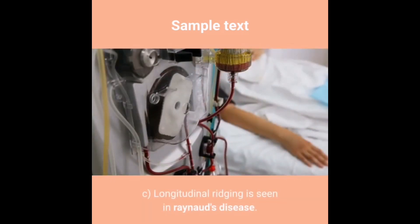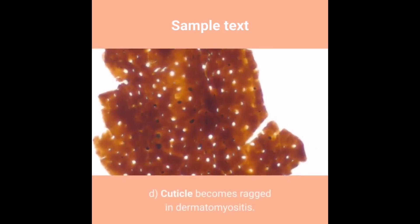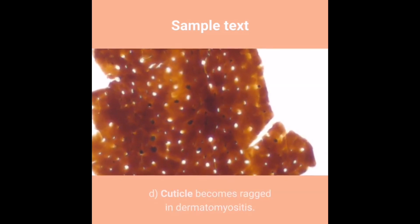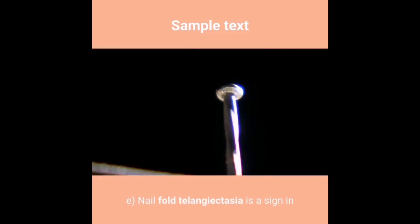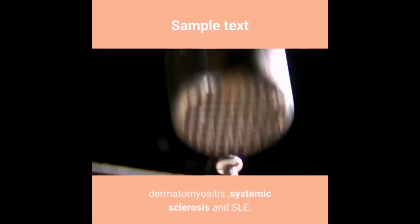C) Longitudinal ridging is seen in Raynaud's disease. D) The cuticle becomes ragged in dermatomyositis. E) Nail fold telangiectasia is a sign in dermatomyositis, systemic sclerosis and SLE.